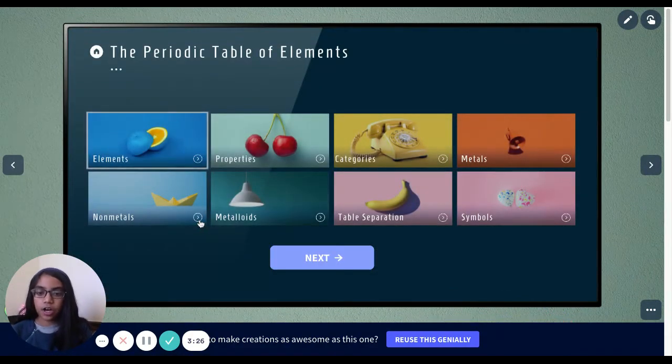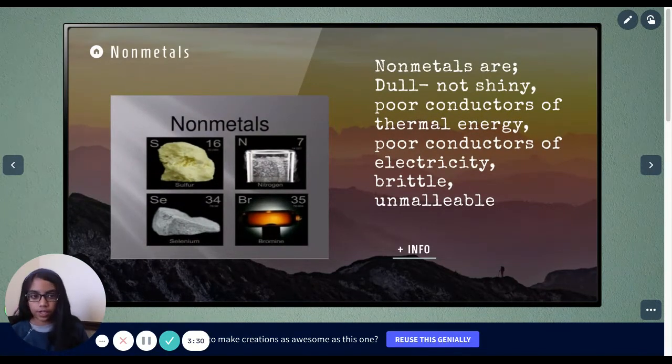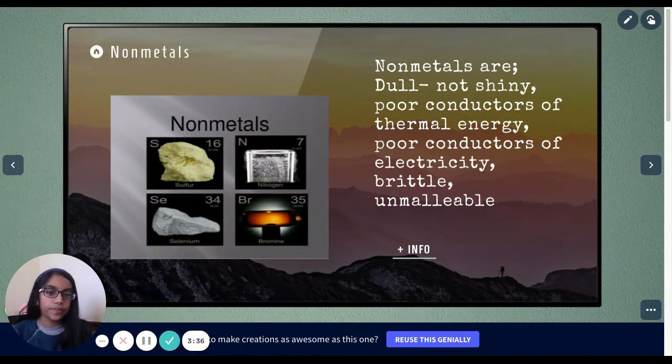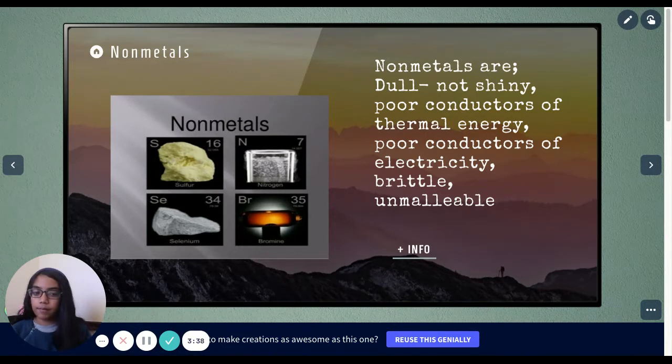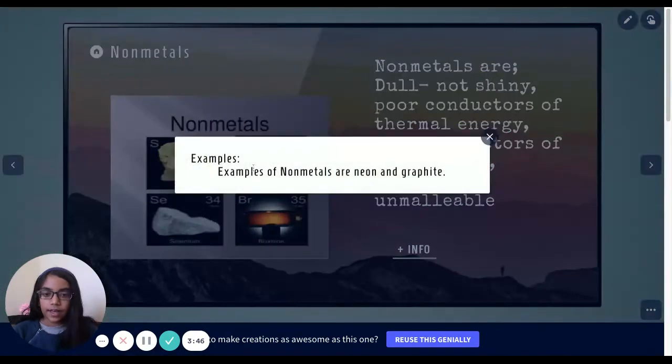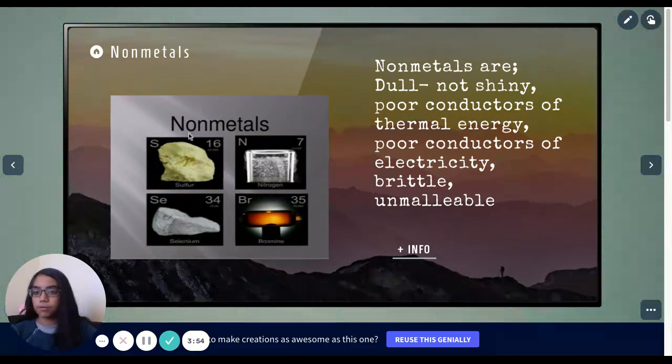Now let's go on to non-metals. Non-metals are dull, which is not shiny. Poor conductors of thermal energy. Poor conductors of electricity. They are brittle and unmalleable, which is not being able to be mashed that much. Samples of non-metals are neon and graphite. And over here, you can see sulfur, nitrogen, selenium, and bromine. They're all non-metals.